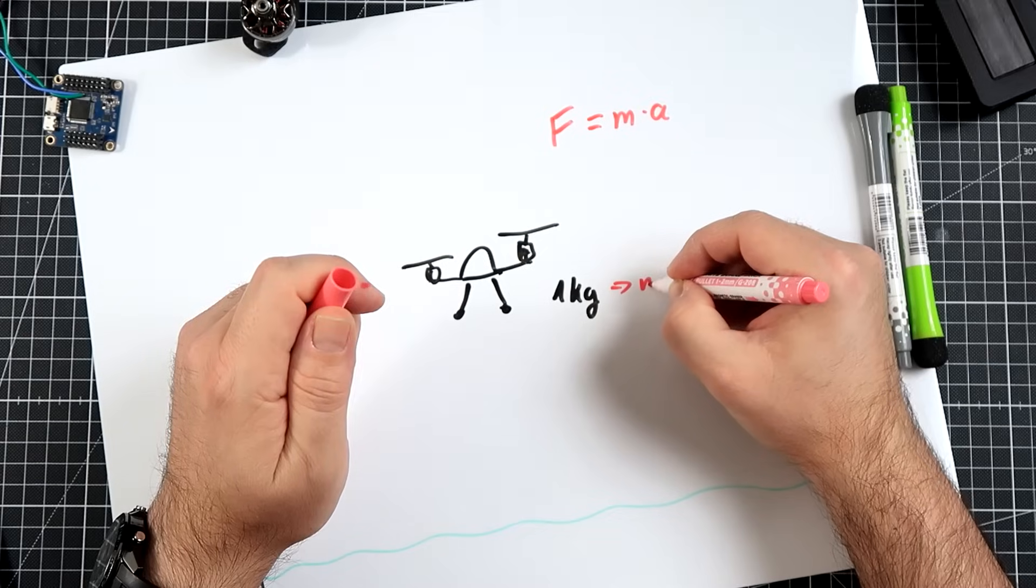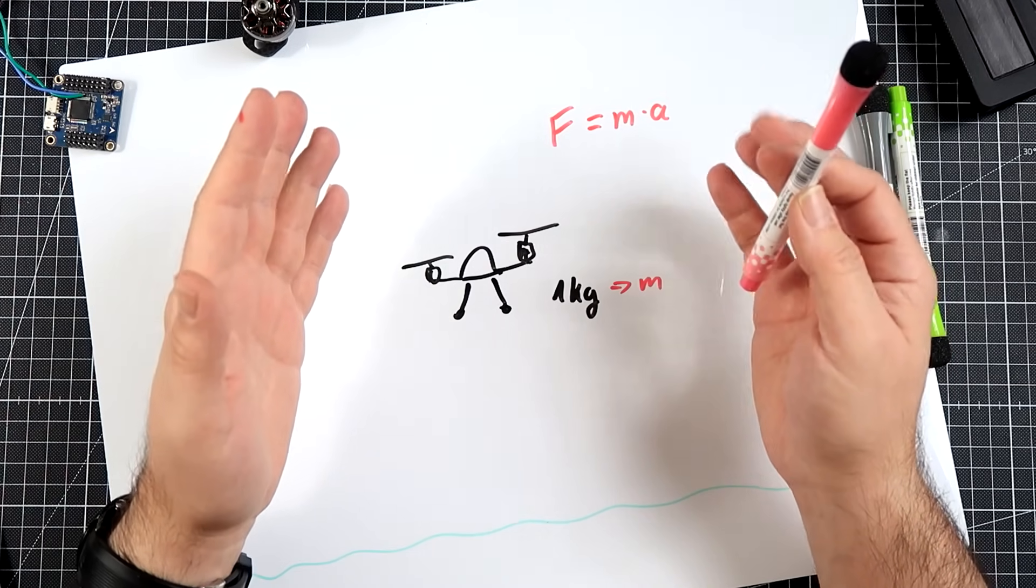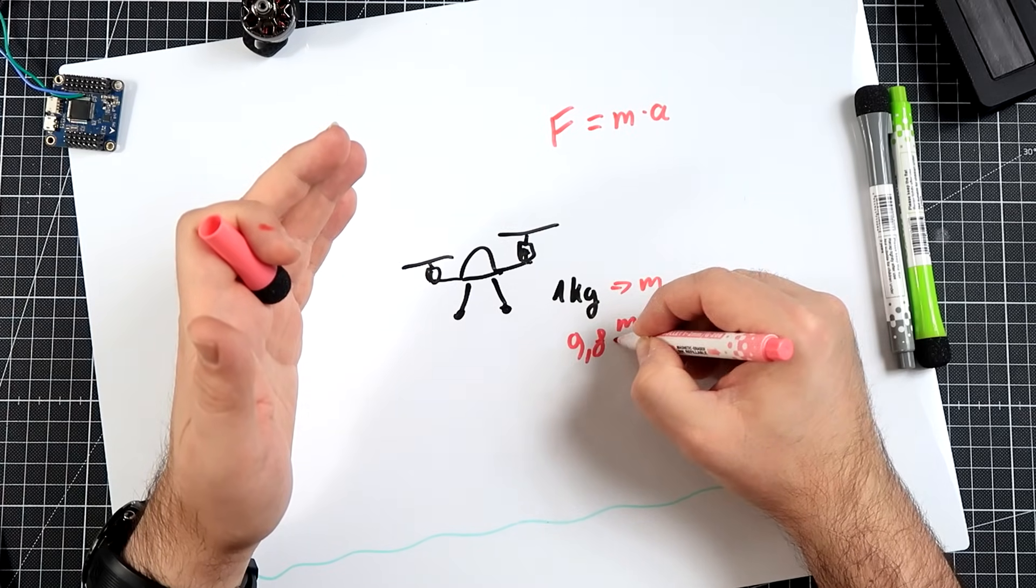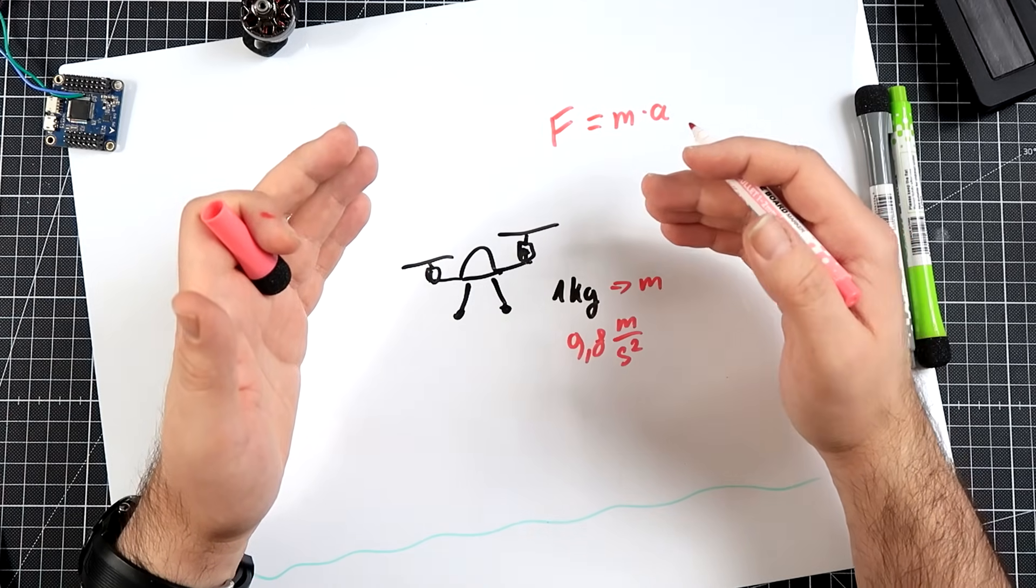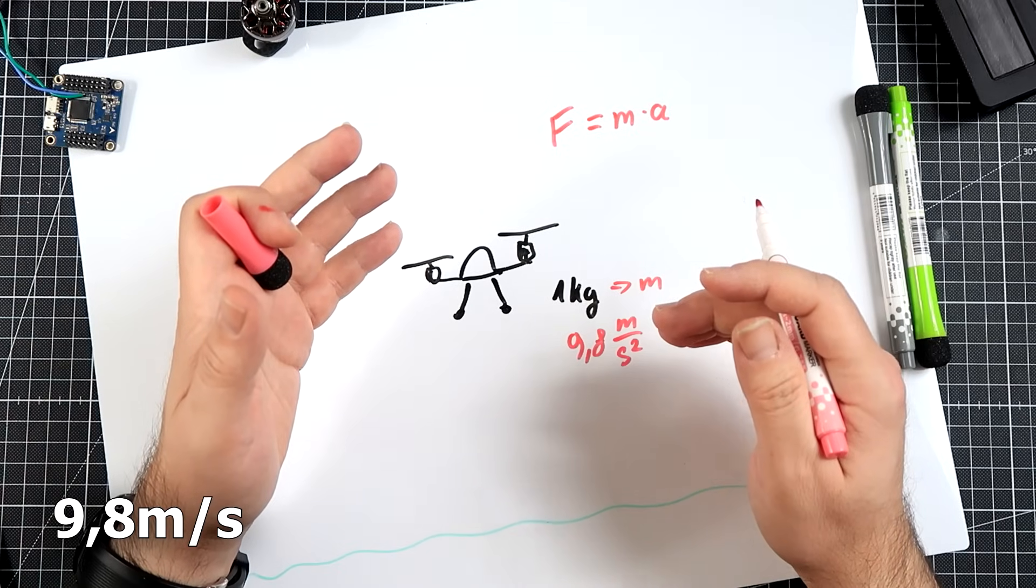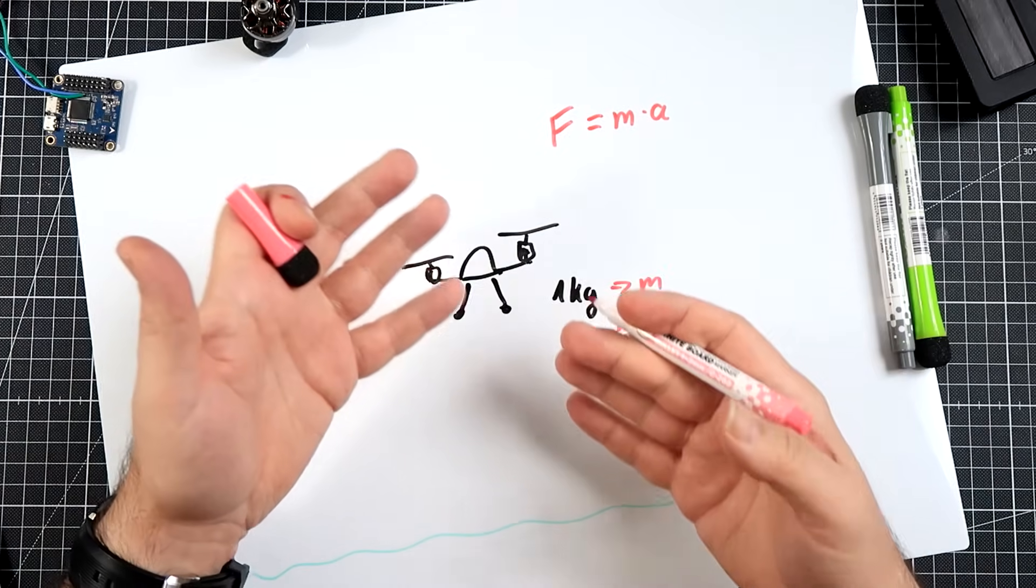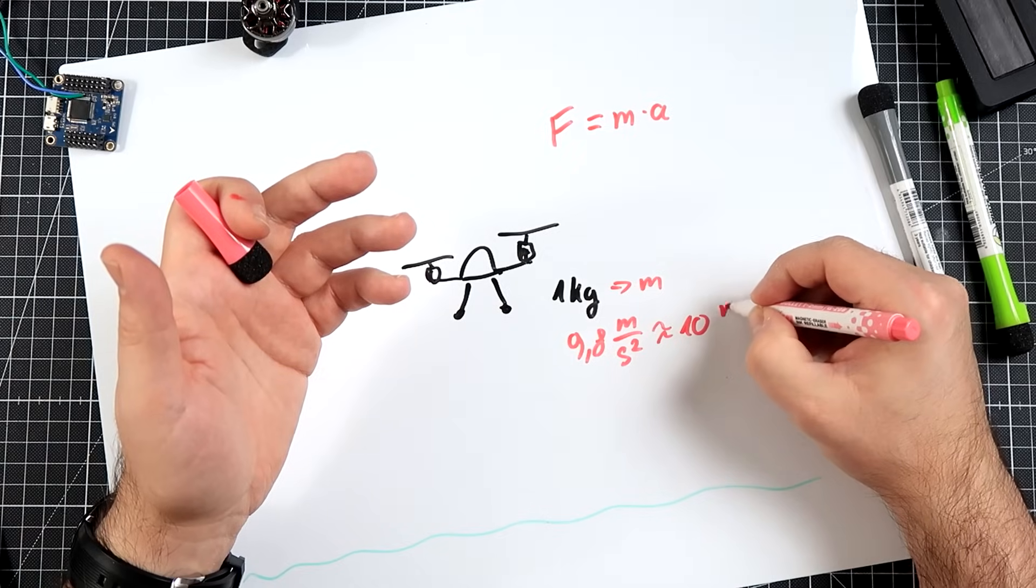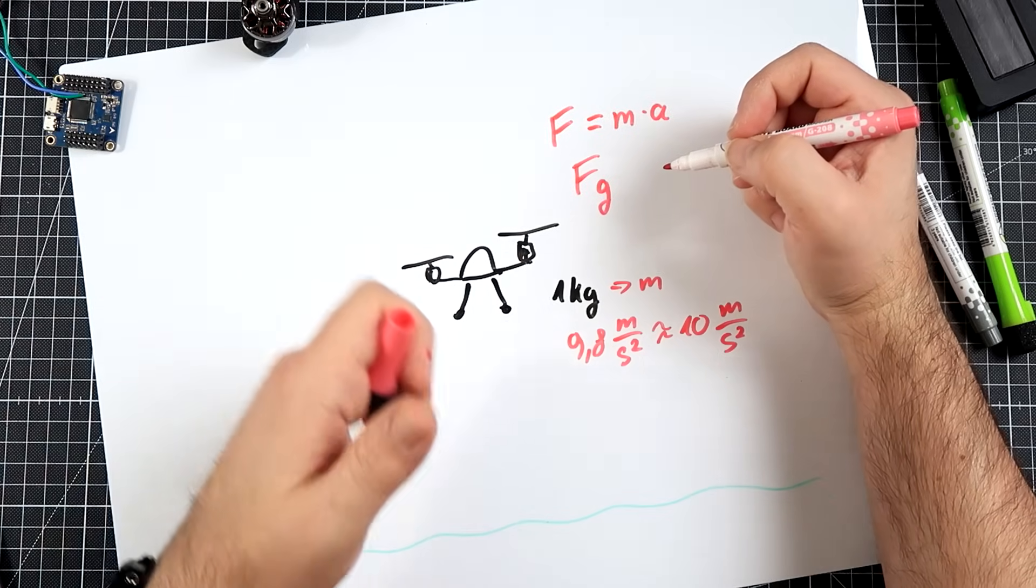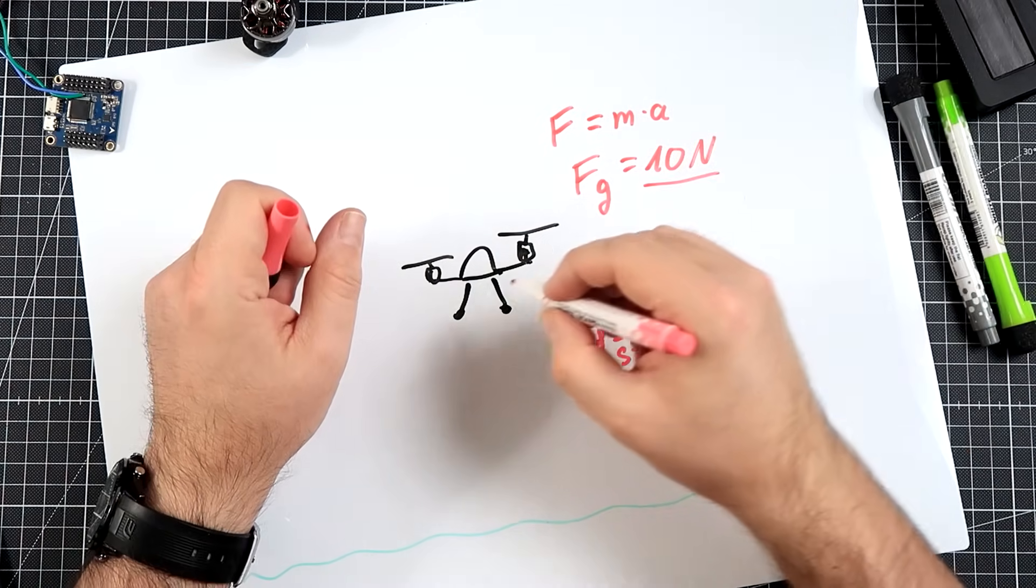Mass 1 kilogram, so this is our M. What is the A? A is the earth acceleration. We live on earth so everything is under the influence of gravity, which is 9.8 meters per second squared. That means after free fall for one second the body will have speed of one meter per second, and after another second it will add some more. The speed of the fall is growing because of acceleration. We can approximate to 10 meters per second squared. If we put this in, F in this case is the force of gravity pulling our drone down, which equals 10 newtons.